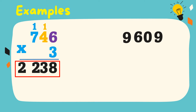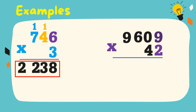Another example: 9,609 times 42. In this example, we have a 2-digit multiplier. So we're going to multiply first 2 to its digits in our multiplicand. 2 times 9 is equal to 18. Write 8, regroup 1.